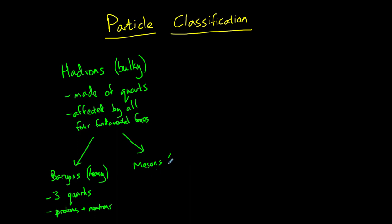Mesons, meaning intermediate in Greek, are particles made of one quark and one antiquark. Examples of mesons include pions and kaons. More of those in a later video.